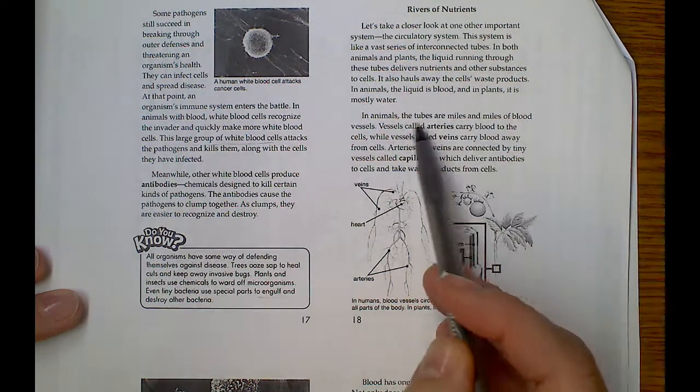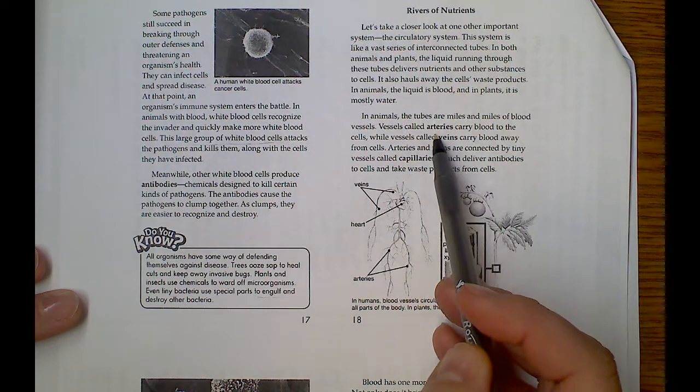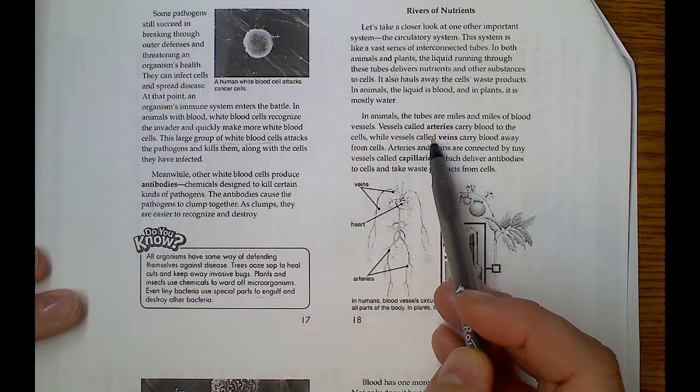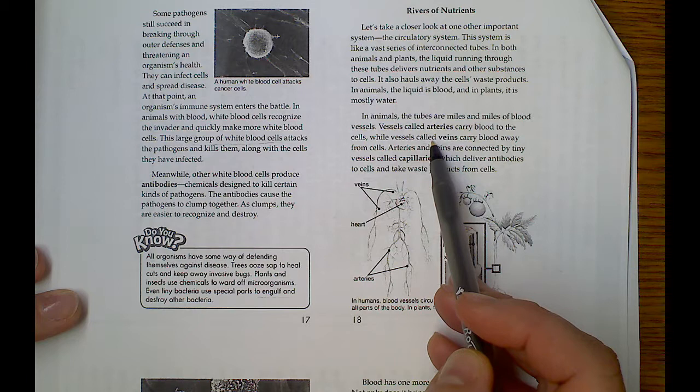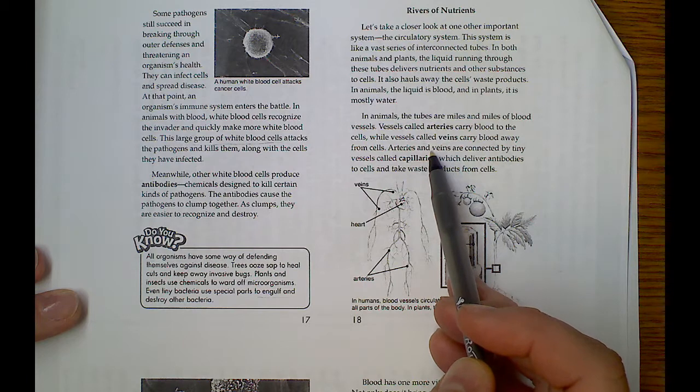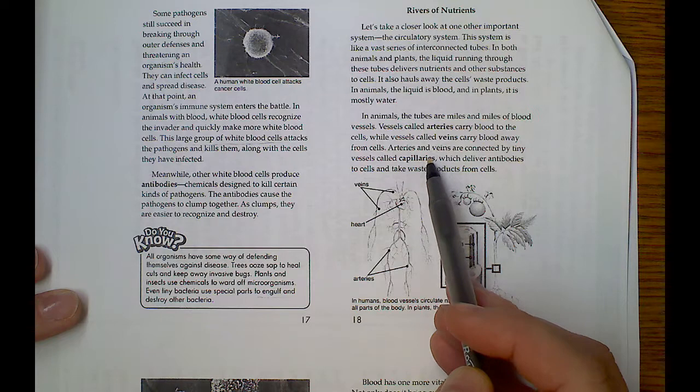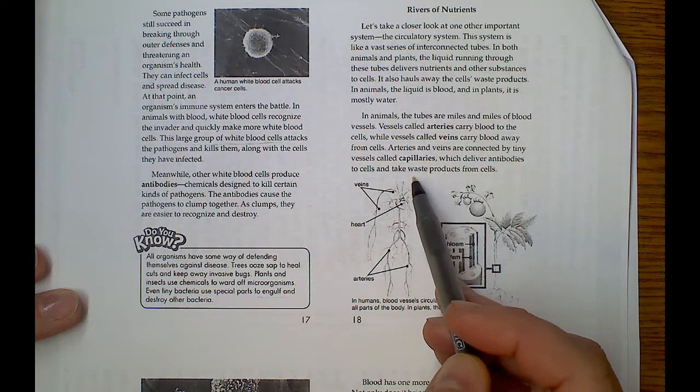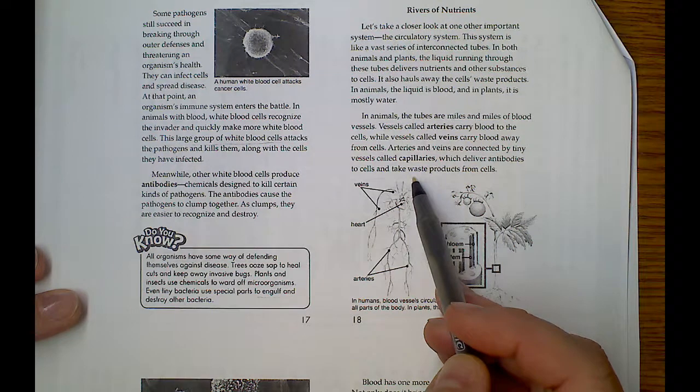In animals, the tubes are miles and miles of blood vessels. Vessels called arteries carry blood to the cells. While vessels called veins carry blood away from the cells. Arteries and veins are connected by tiny vessels called capillaries, which deliver antibodies to cells and take away waste products from cells.